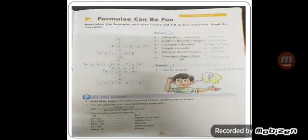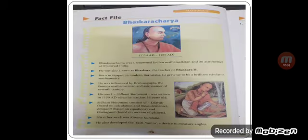Then we come to the next page, formula can be fun. Some formulas are given here. In the across section we will see: selling price minus cost price equals profit. Length times breadth times height is volume. 2 times length plus breadth is perimeter. Length times breadth is area. Distance divided by time is speed. Principal times rate times time divided by 100 is the formula for calculating interest. In the scale down section, 2 pi r in a circle is the circumference. This is the formula, and a crossword is also been solved.